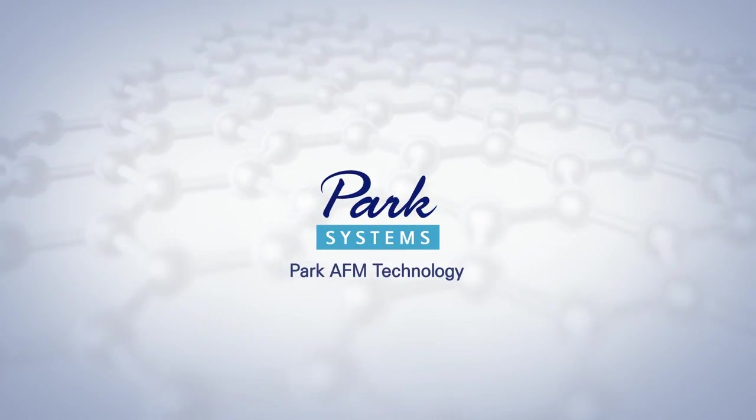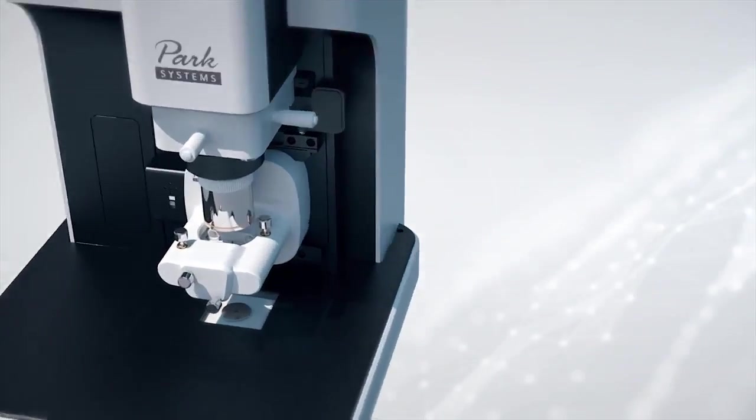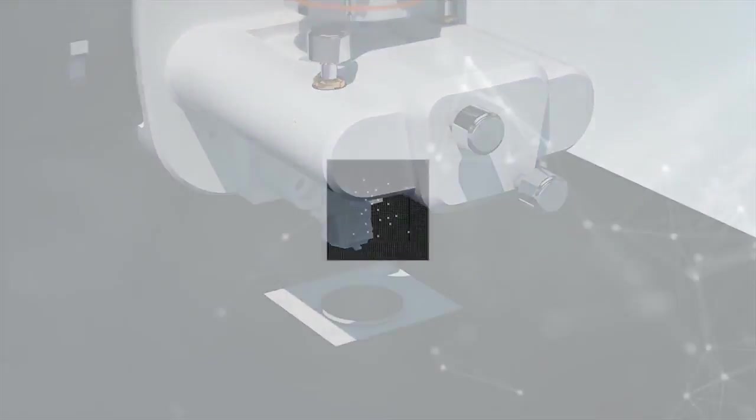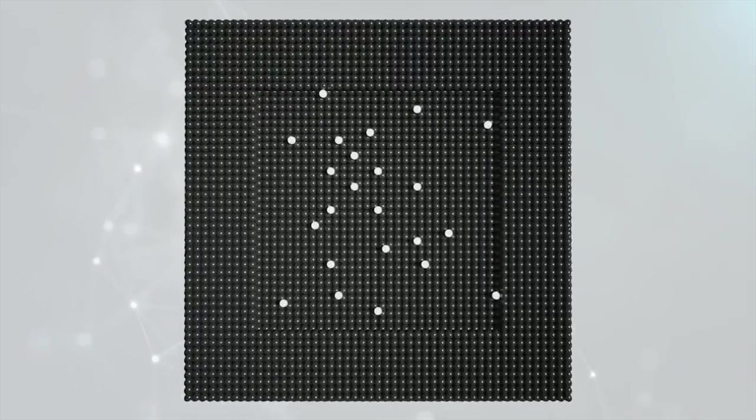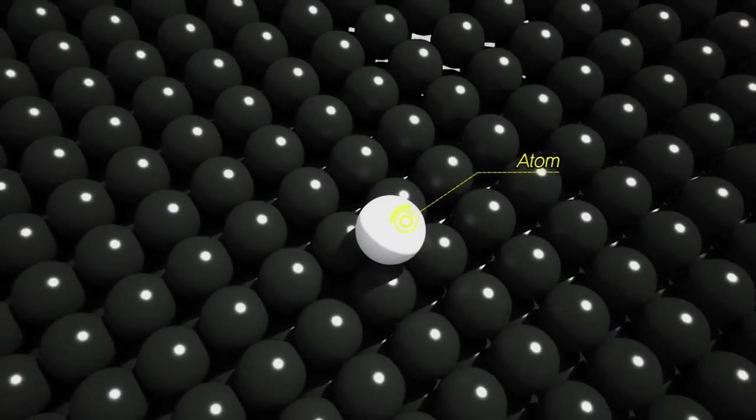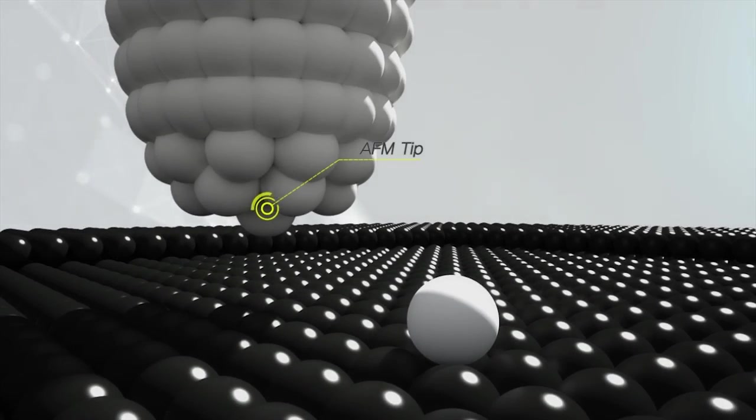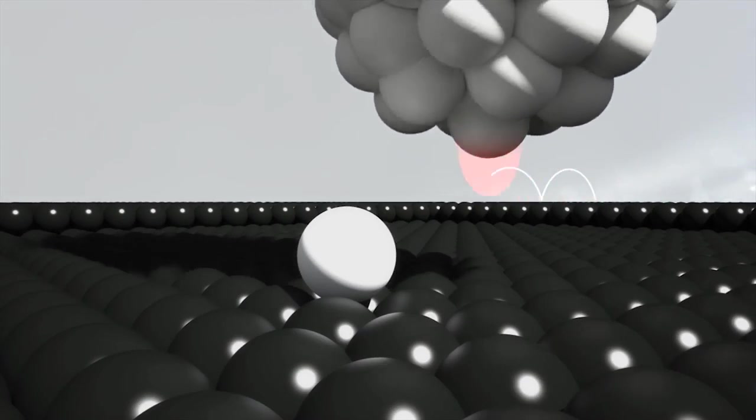Park AFM Technology. An atomic force microscope is a device which measures the form and various physical properties of a sample by bringing the tip of a probe to the sample surface and measuring the interaction forces between the atoms of the tip and those of the sample.